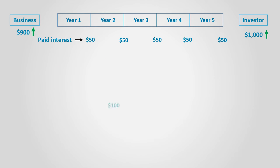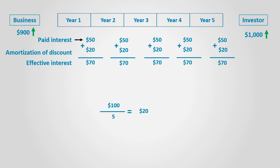From an accounting perspective, and based on accrual accounting, this $100 should be fairly distributed among the periods of benefit. We will distribute the $100 using the straight-line method for simplicity, although the effective interest method should be used, which is usually a topic of an intermediate accounting course. By distributing the $100 over five years, the share of each year is $20.